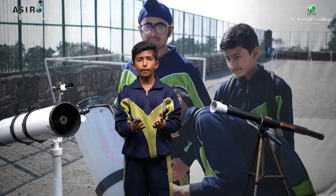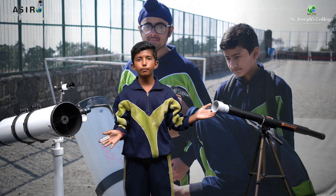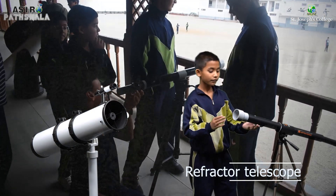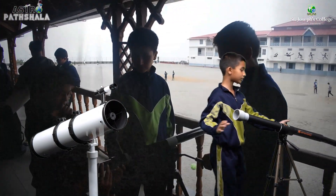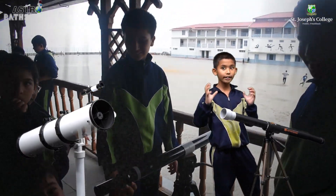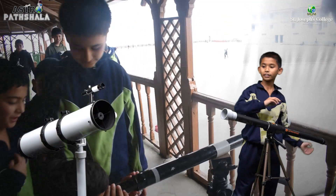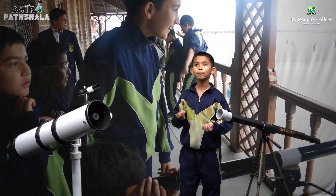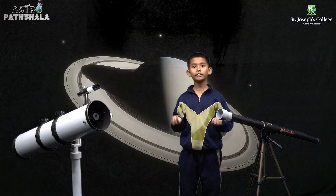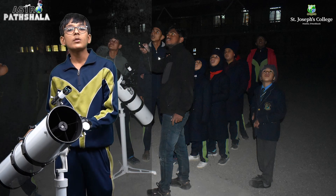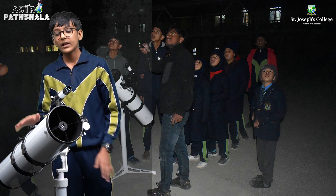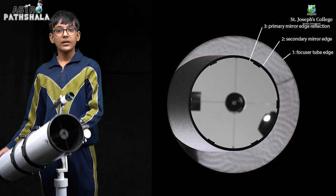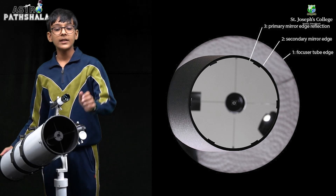We observe the sun with the help of this telescope, which we made ourselves. This telescope type is a reflector telescope. It has a big lens and a small lens. It gathers light and reflects it to show things far away from us. We can see things like moons, Saturn, and Jupiter. This telescope is known as a 150mm Newtonian telescope, invented by Isaac Newton. It has two mirrors — a primary mirror and a secondary mirror.